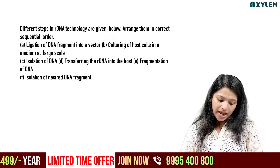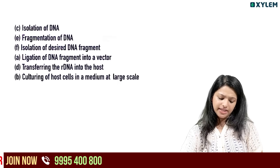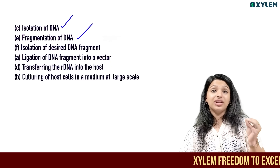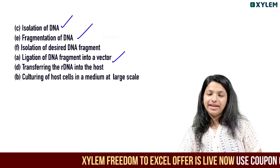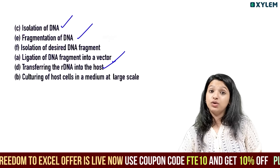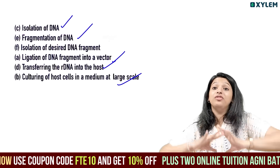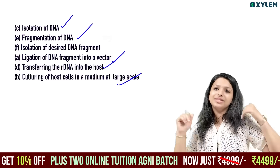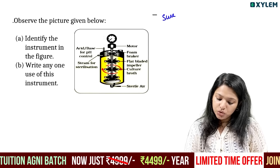The different steps in rDNA technology are given below. Arrange them in the correct sequential order: isolate the DNA, fragmentation, isolate the desired DNA fragment, ligation into a vector, transfer the rDNA into a host, culturing of the host cell in a medium for large-scale production of multiple copies.